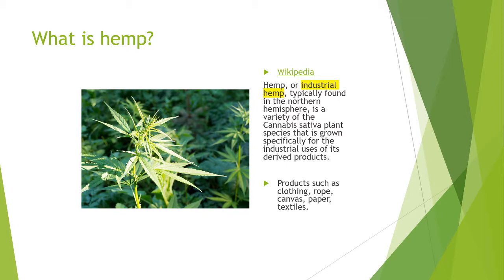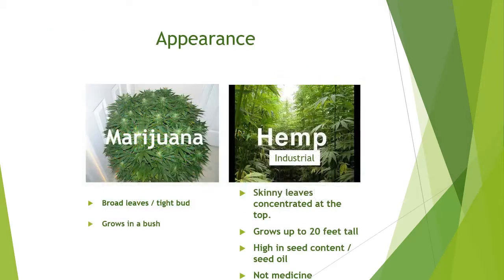So it's no wonder that people are confused. The cannabis plant Wikipedia is referring to can be seen here. Cannabis that is marijuana is on the left and industrial hemp is on the right. As you can see they even look very different because they are different plants. Marijuana has broad leaves and grows in a bush, while industrial hemp grows up to 20 feet tall and has skinny leaves and a very high seed content.